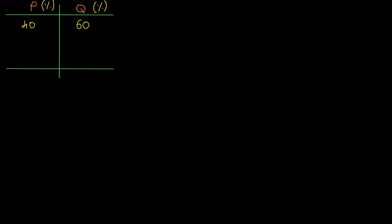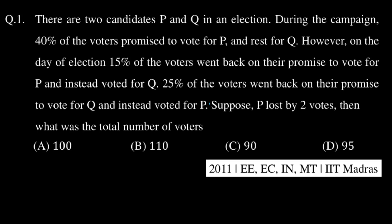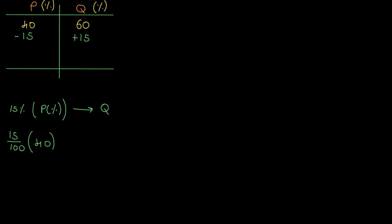Now as told in the question, 15% of voters who promised to vote for P — that means 15 out of those who promised to vote P — went on to vote for Q. The main mistake we do is we take 100 as the base and write 15% of total voters did not vote for P and subtract 15 from here. That is not the case. Read the question — they told 15% of voters who went back on their promise to vote P, not 15% of total people. So in that case, this should be 6%. I will erase the wrong value.